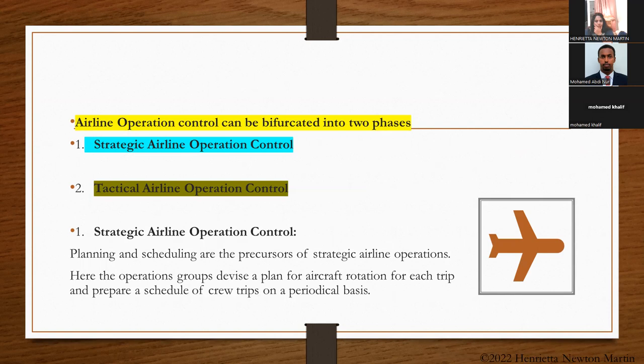Airline operation control can be bifurcated into two phases — you can broadly classify it into two for the purpose of study. That is, strategic airline operation control and tactical airline operation control.